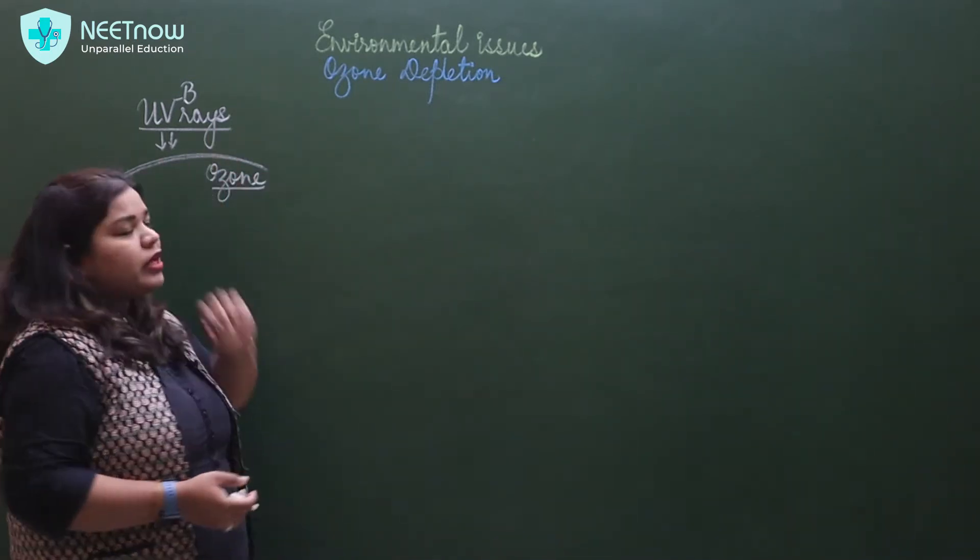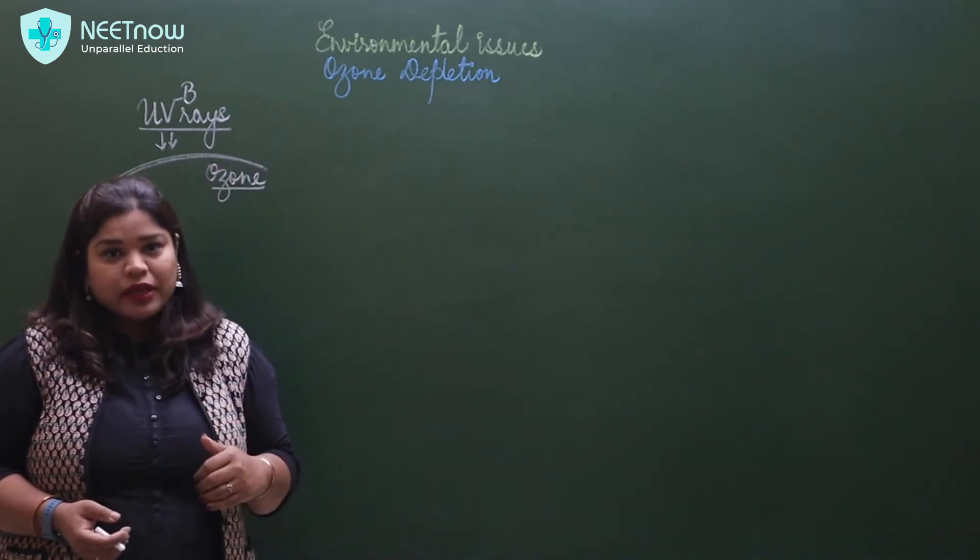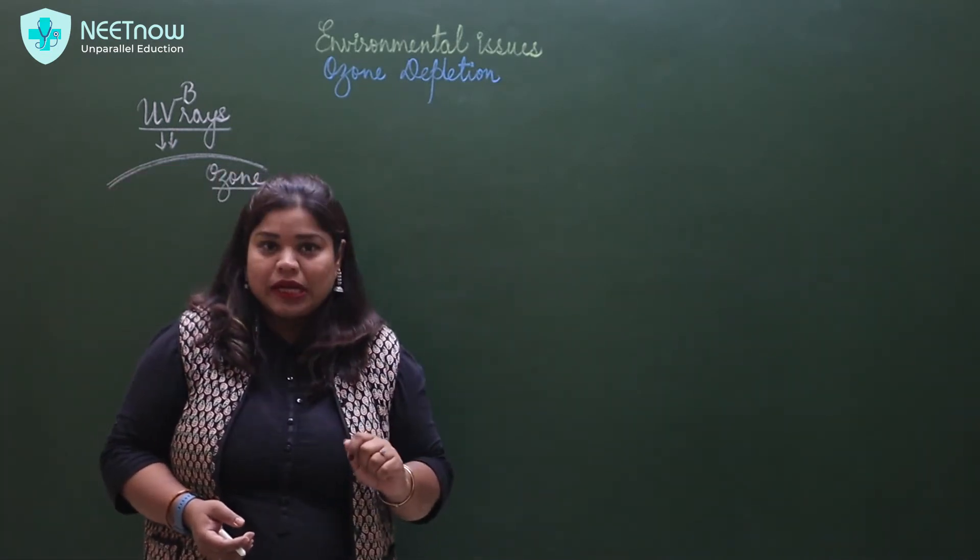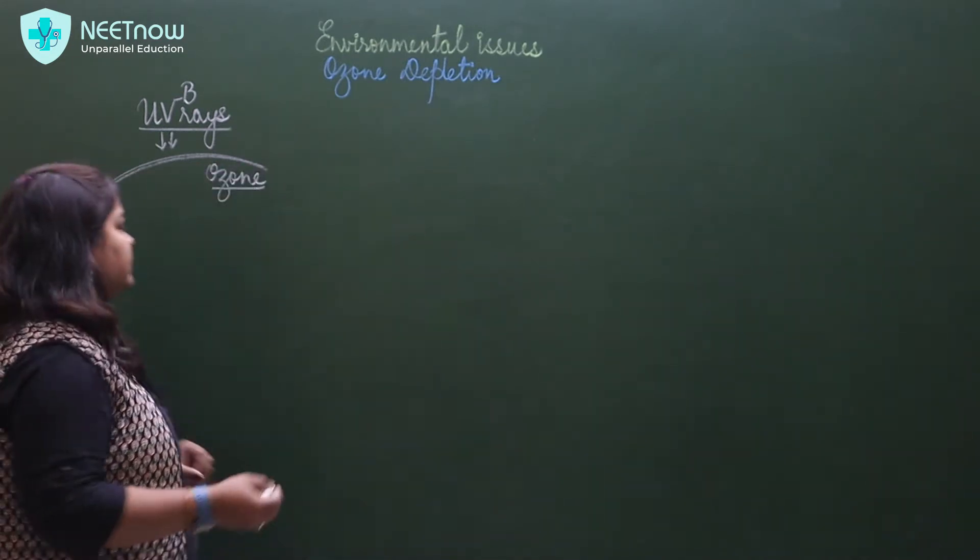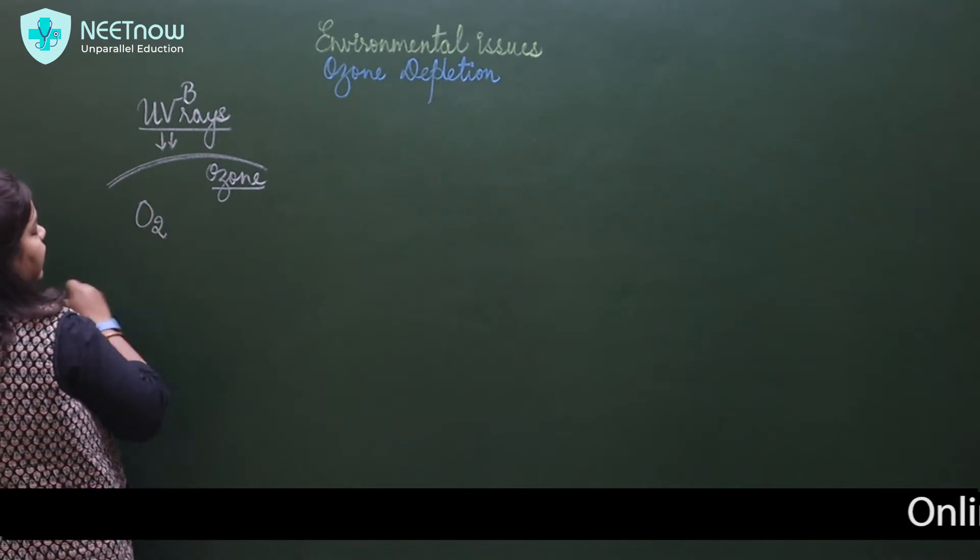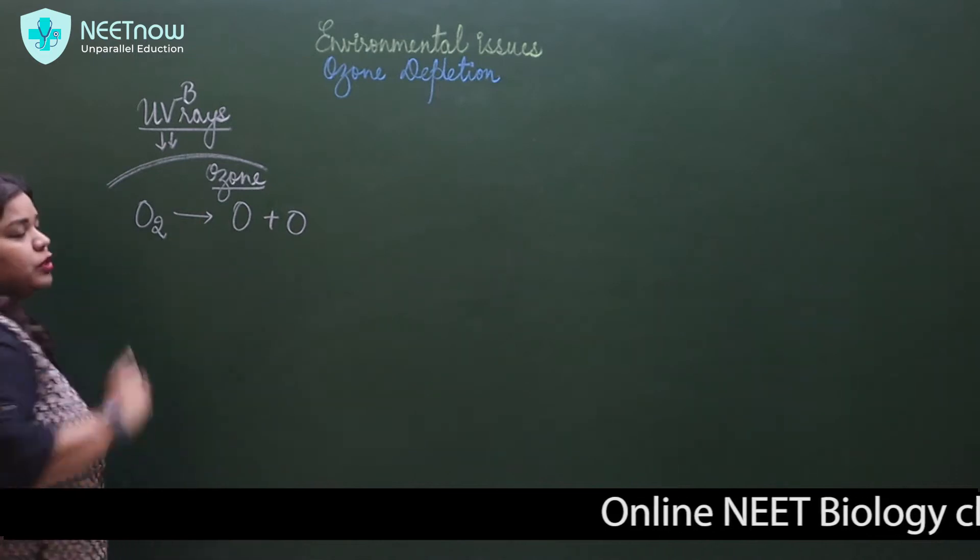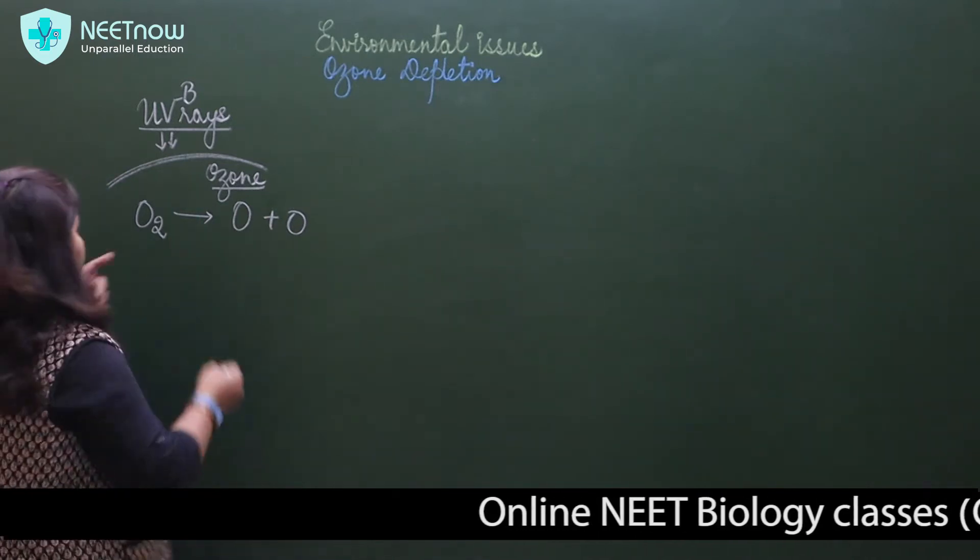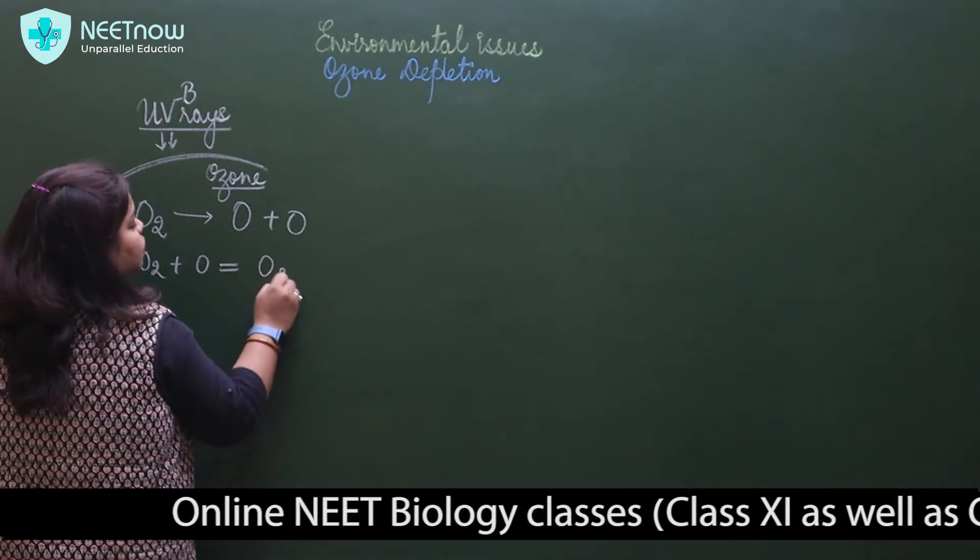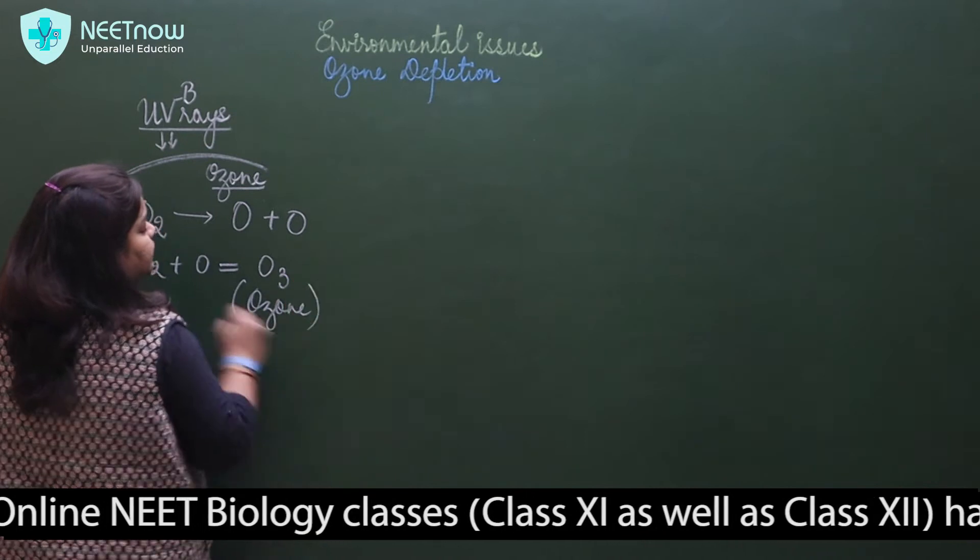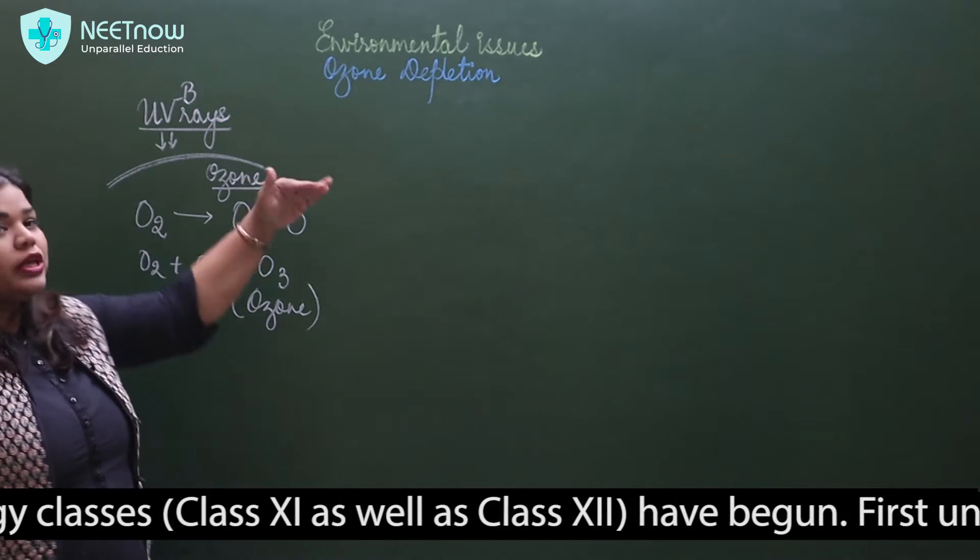We take every care that UV rays will not reach us because they are very harmful. Ozone has the potential to protect us. Ozone is the umbrella which acts so that UV rays cannot come through. How is ozone formed? When oxygen molecules react, O2 plus O gives you O3, which is ozone. This ozone formation continues, acting as a shield.